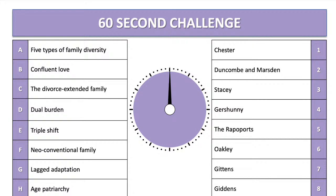We're going to look at a 60-second challenge. You have eight pairs of responses: on the left-hand side, a description of a study or key term from a piece of research; on the right-hand side, a sociological researcher. You have to match those up. When we go to the next slide, the clock will start ticking and you'll have 60 seconds. Put the pairs in the chat box and we'll go through the answers at the end.